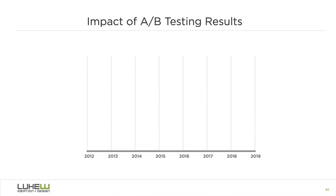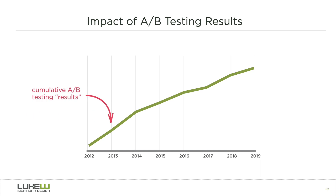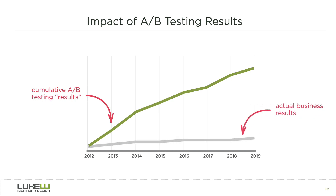Many companies have results that look like the button color example. In isolation, they show great short-term gains. But when you look at the long-term impact, the numbers tell a different story. Multiple successful A/B tests you'd think would give you cumulative results much larger than what most companies end up seeing.